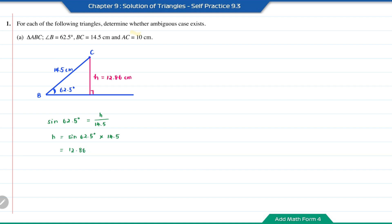The length AC is just 10 cm, which is less than the height of this triangle. So the point A will never touch the horizontal straight line. Therefore, there will be no triangle formed, and there will be no ambiguous case here.